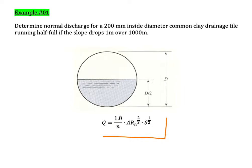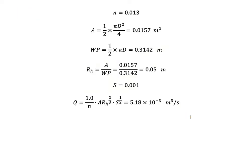The Manning equation is: Q equals (1/n) times A times Rh to the power of 2/3 times the square root of S. We can calculate using this equation. The value of n, from the table, is equal to 0.013.